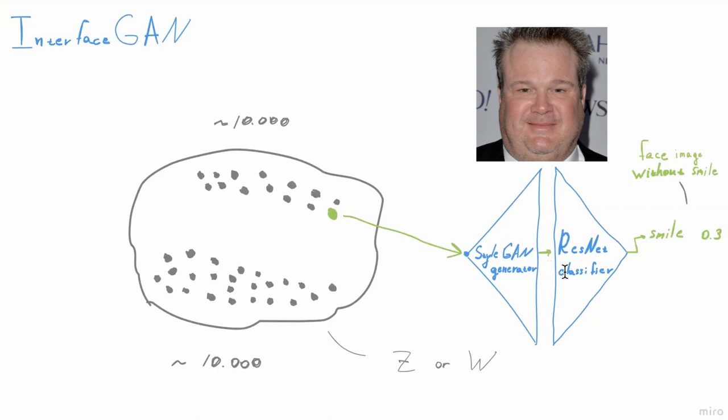The generated image is being classified by a pre-trained classifier for a given attribute, for example, smile. This image has a low score for the attribute smile. Therefore, we can classify this point as a face image without smile.